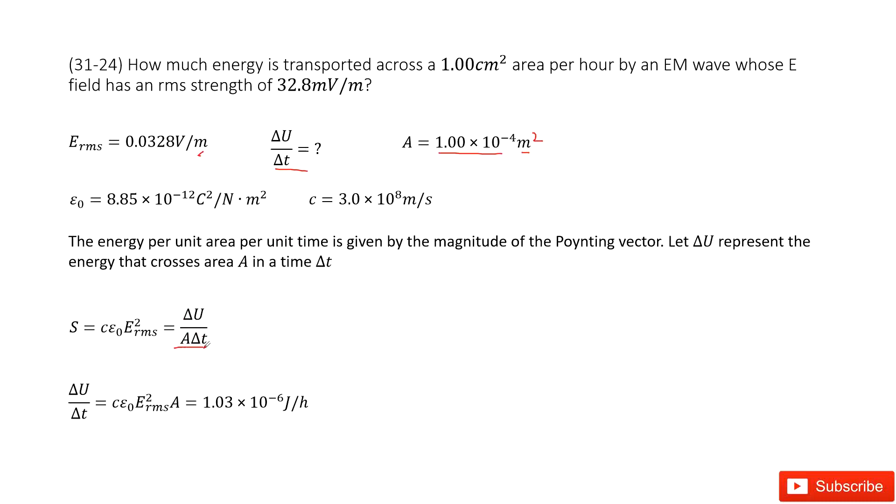Now we can see this term equals delta U over delta T. Another way to define the Poynting vector with E_RMS is epsilon naught c E_RMS squared. Now we can see c and epsilon are constants you can find in your textbook. From this equation, very easily we can convert to get a function of delta U over delta T and input all the given quantities. We get the answer there.